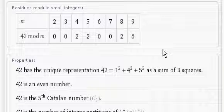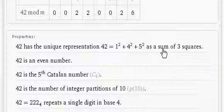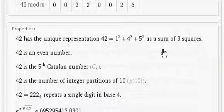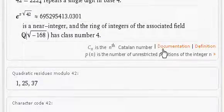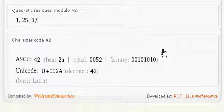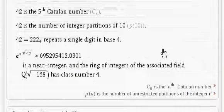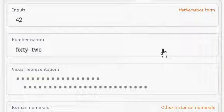And 42 has a unique representation as a sum of 3 squares. It's an even number. 42 is the fifth Catalan number. Not sure what that means. And so here we have all of the various representations of 42. So there we go. Thanks for watching.